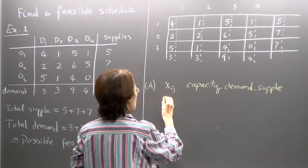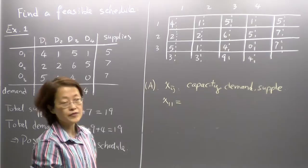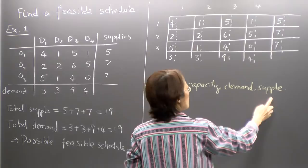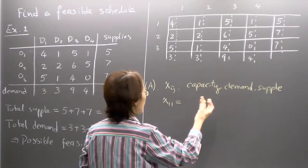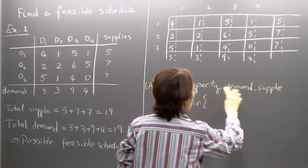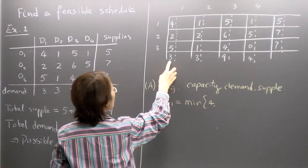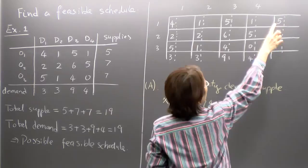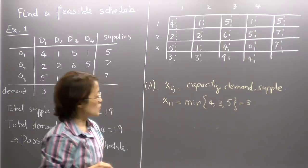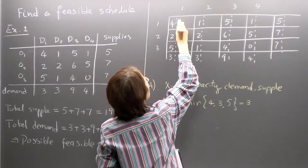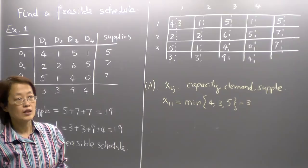For x_{1,1}: I take the minimum of capacity (4), demand (3), and supply (5) — the smallest is 3. So I ship 3 units from O1 to D1. For x_{1,2}: capacity is 1, demand is 3, and remaining supply is 5 minus 3 equals 2. The minimum is 1, so I ship 1 out. For x_{1,3}: capacity is 5, demand is 9, remaining supply is 5 minus 1 minus 3 equals 1. So I ship 1 unit. I've now shipped all 5 units from origin one — nothing left for x_{1,4}.